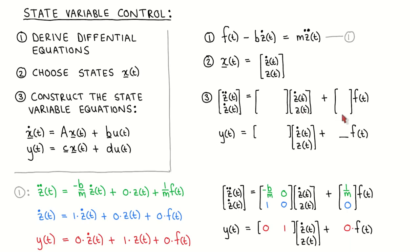For the second line of the state equation, we see that the derivative of the second state is equal to the first state z-dot. We therefore write that z-dot equals one times z-dot plus zero times everything else, and fill in the second line. For this example, the measured output is the displacement z, which is the second state. We therefore write the output as zero times z-dot plus one times z plus zero times the input f, which allows us to complete the output equation.